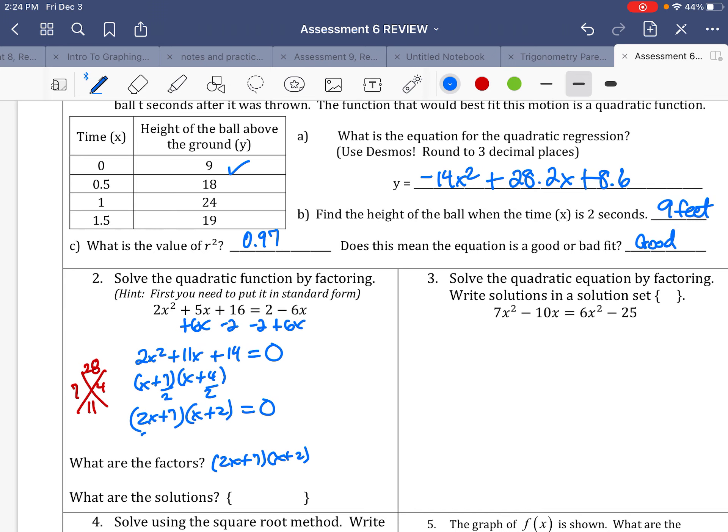My factors are 2X plus 7 and X plus 2. Remember, I have to get solutions. So this guy right here, I take 2X plus 7, set it equal to 0. I take away 7, divide by 2. That means my answer is negative 7 over 2. Here, I take X plus 2, set it equal to 0. Take away 2. That means my answer is negative 2. So my answers are negative 7 halves and also negative 2.